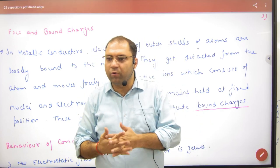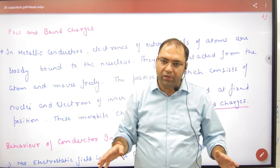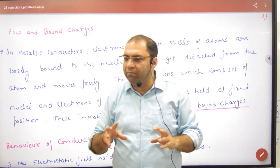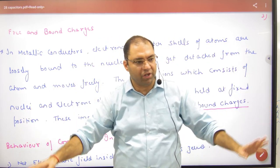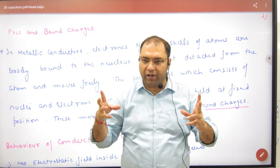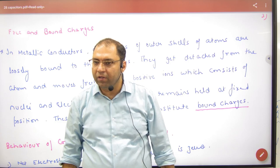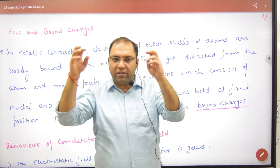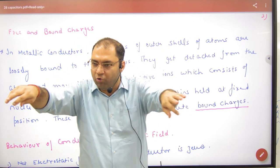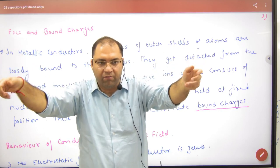Suppose there is a conductor. I am going to apply an electric field in front of this conductor. So when I apply a high electric field, the outermost electrons — loosely bound — are affected.